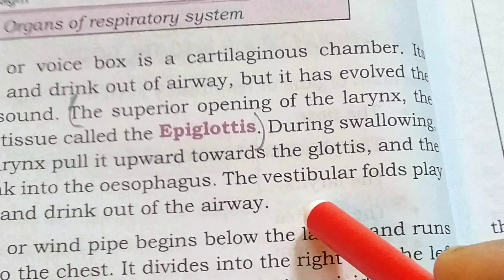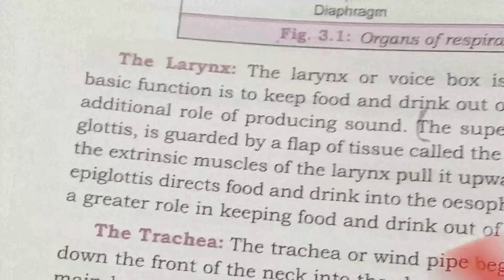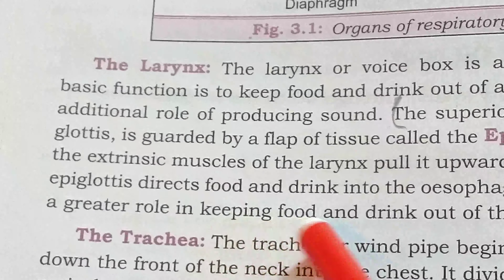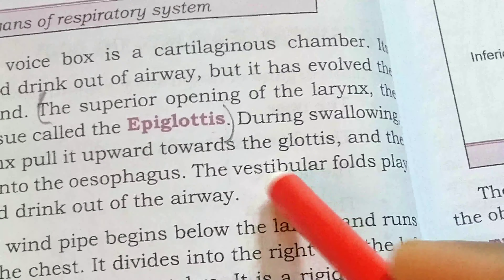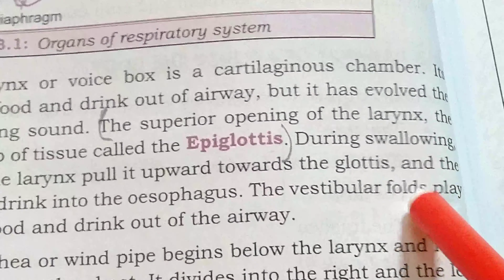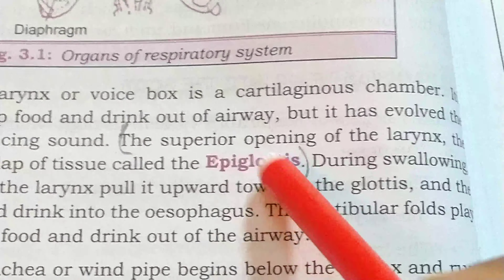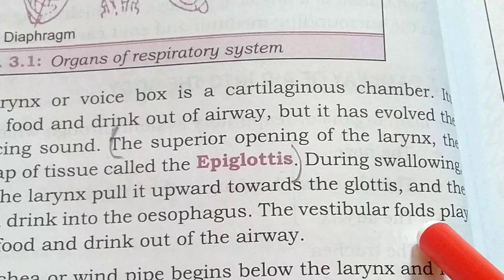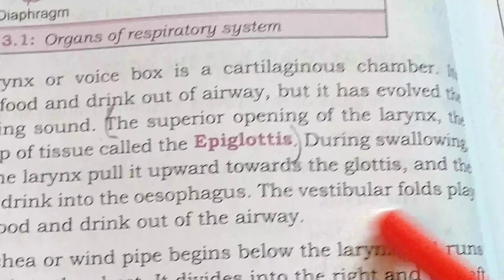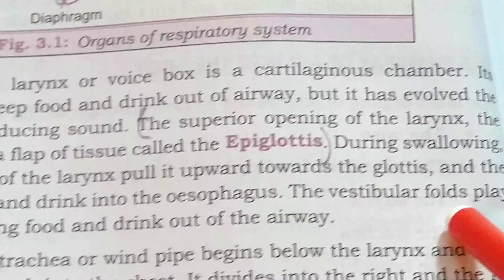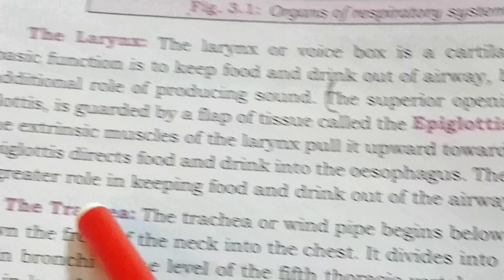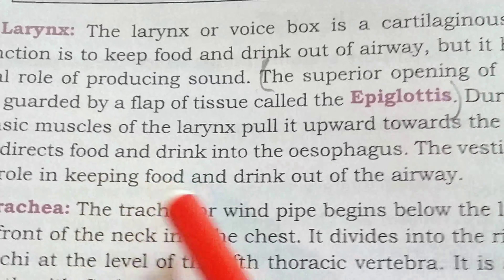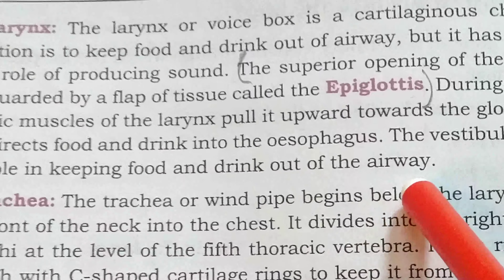The vestibular folds play a greater role in keeping food and drink out of the airway. These flattened structures inside the larynx, similar to the epiglottis, are known as vestibular folds and are important for preventing food and drink from entering the airway.